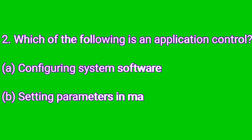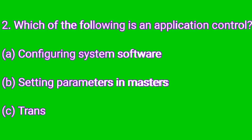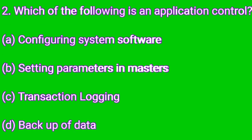Question number two: which of the following is an application control? Option A: Configuring system software. Option B: Setting parameters in masters. Option C: Transaction logging. Option D: Backup of data. The answer is C — Transaction logging is an application control, so the right answer is C: Transaction logging.